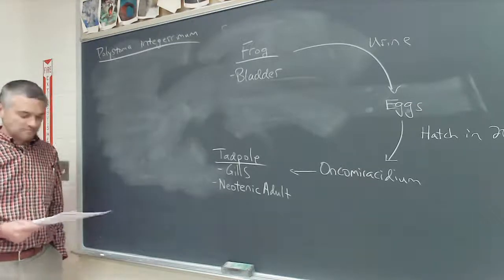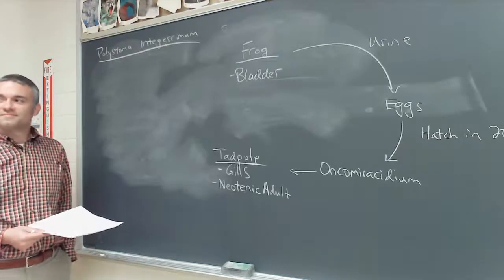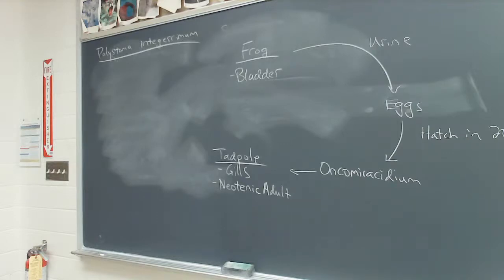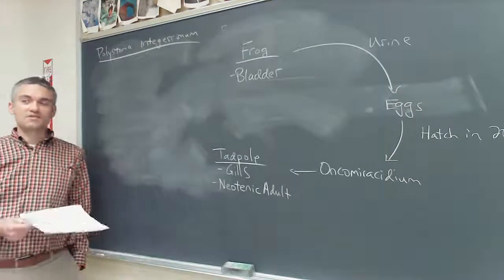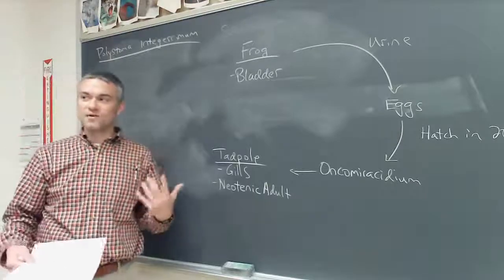What does neotenic mean? Neoteny is the development to sexual maturity while retaining juvenile characteristics. The classic example is salamanders that mature into adults but retain their larval gills and remain completely in the aquatic system to reproduce. Not all of them do that — some undergo complete metamorphosis and move to land. Here we have a neotenic adult, which is our external stage.